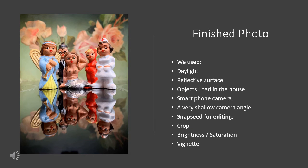I think this image is looking really quite good. It is now finished, and just to recap: we used daylight, so no special lighting at all; a reflective surface from the house; and some objects I had sitting around. I used a smartphone camera — nothing special. The only important thing was that the camera angle was really shallow, really close to the reflective surface. Then in Snapseed I did a crop, enhanced the brightness and saturation, and right at the end added some vignette.